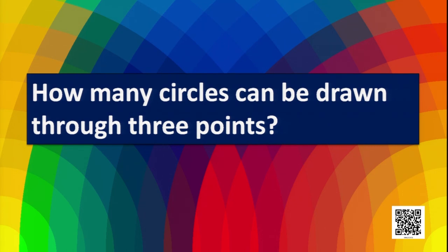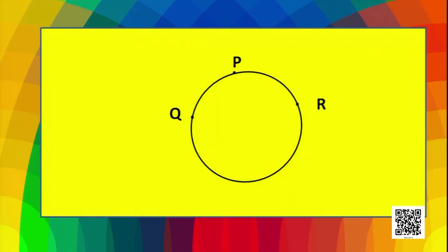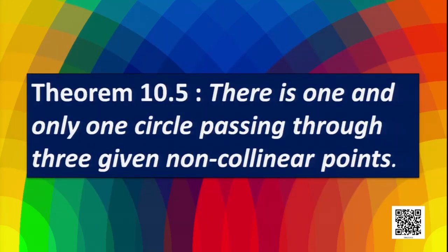Then what about the number of circles if it exceeds two? That is, how many circles can be drawn through three points? Here P, Q, R are three points and one circle is drawn through them. The answer is stated by this theorem: there is one and only one circle passing through three given non-collinear points.